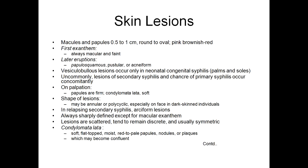Later eruptions may show papulosquamous, pustular, or acneiform eruptions. Vesiculobullous lesions may be seen uncommonly. Lesions of secondary syphilis and chancre of primary syphilis may occur concomitantly. On palpation, papules are firm; condyloma lata is soft. Shape of lesions may be annular or polycyclic, especially on the face and in dark-skinned individuals. In relapsing secondary syphilis, arciform lesions — in the form of a semicircle — are always sharply defined except for macular exanthem. Lesions are scattered, tend to remain discrete, and are usually symmetric.